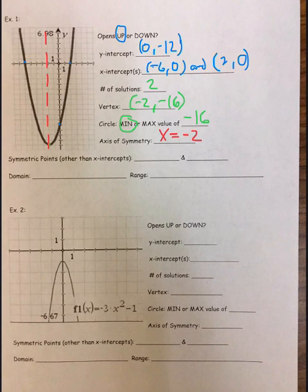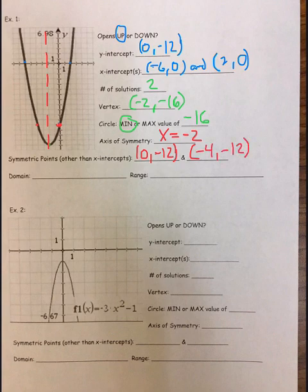The symmetric points, we can pick any. We could pick this y-intercept at 0, negative 12 and find the other point over here. So these two points, that would be negative 4, negative 12. They're both two away from the axis of symmetry.